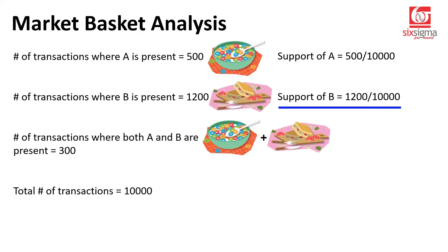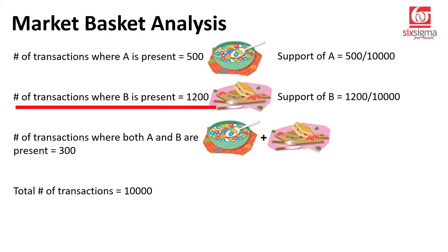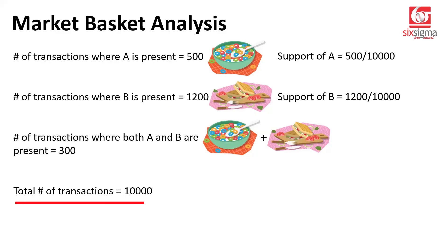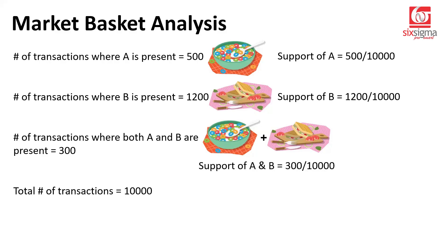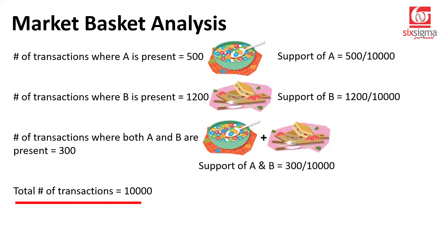Likewise, support of B is 1,200 by 10,000 — that is the number of transactions where B is present divided by the total transactions. And by now you can guess what the support of A and B will be: that is going to be 300 divided by 10,000. Straightforward and simple.